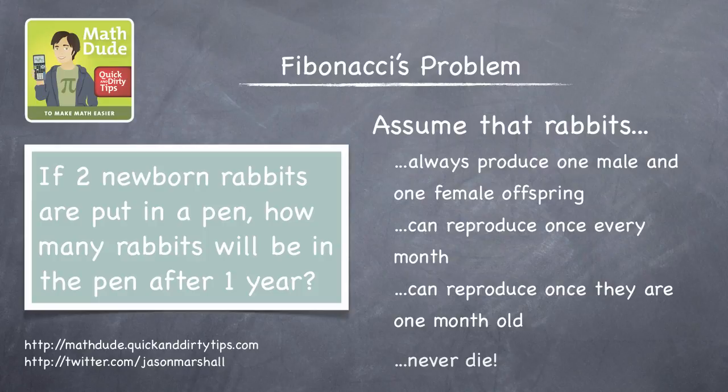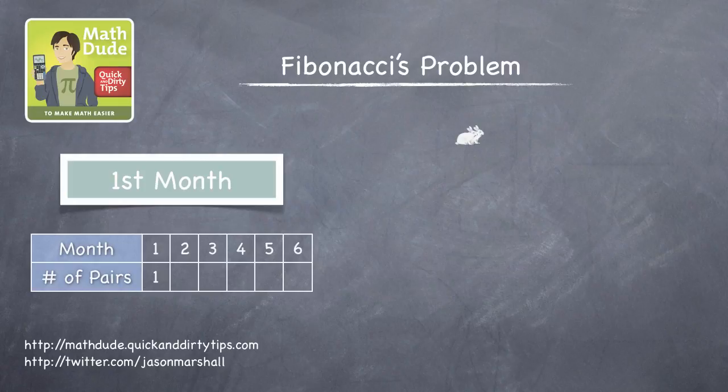So that's the question. What's the solution? Well, let's think in terms of how many pairs of rabbits are in the pen at the beginning of each month, starting with the one newborn pair in the pen at the beginning of the first month.